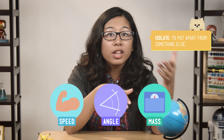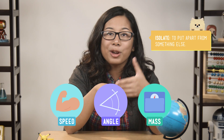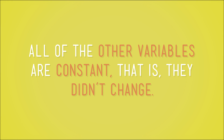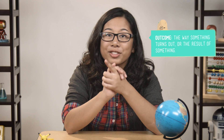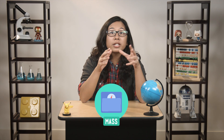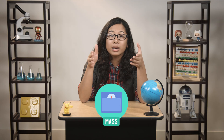Now, we also said that, as good engineers, we're going to choose one variable and isolate it — set it apart from all the other variables to see if and how it changes things. And the variable we chose to isolate was the angle of the ball. In order to isolate this variable, we have to make sure that all of the other variables are constant — that is, they didn't change. That way, we'll know for sure what effect the changing of the angle of the ball has on the outcome, whether we get a strike or not. So we're keeping the mass of the ball consistent by using the same one every time, and we're going to keep the speed of the ball consistent by using a ball ramp.